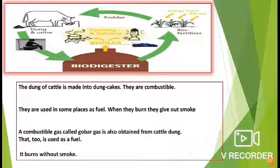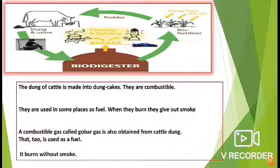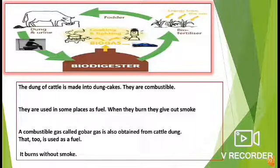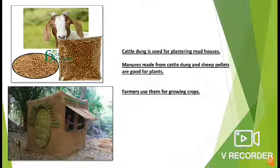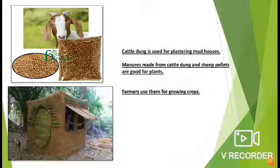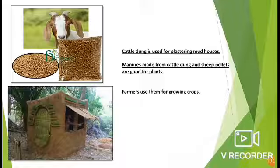A combustible gas called gobar gas, which is also obtained from cattle dung, is used as fuel. Students, look at the picture — it is a biogas cycle where the cattle dung is converted into gobar gas. Cattle dung is also used for plastering mud houses in villages. Manure from cattle dung and sheep pellets are good for plants. Students, pellets are the excreta of sheep and goats. Farmers use them for growing crops.